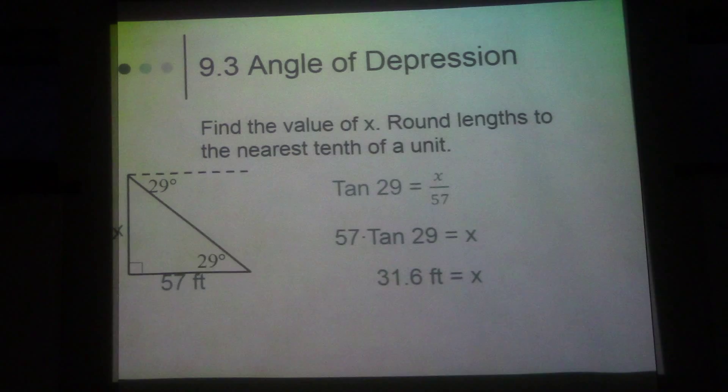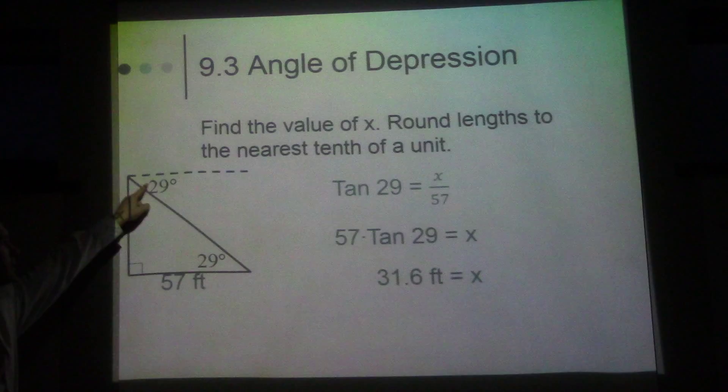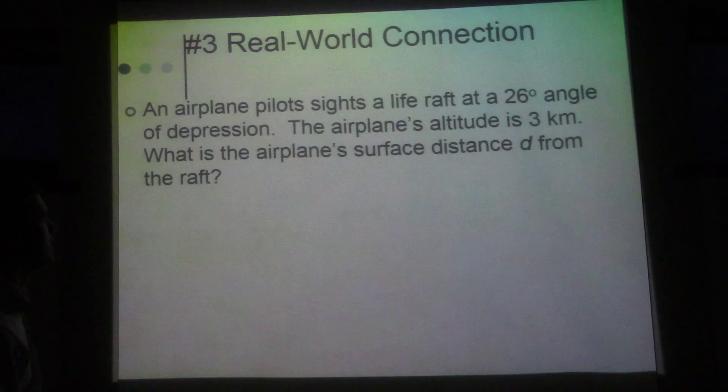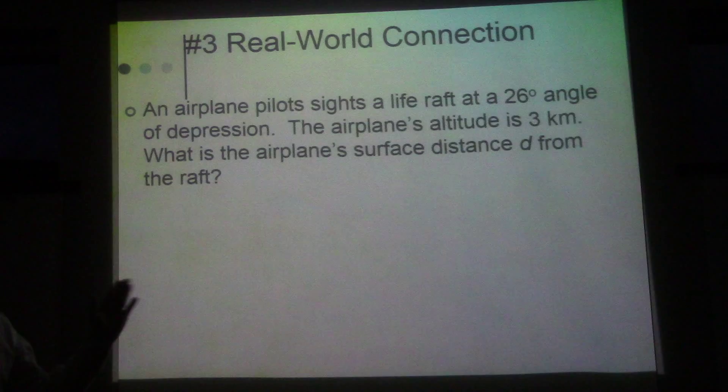Find the value of x, round the lengths to the nearest tenth. So this is just a little practice. So here's our side, we want to solve for x here. This side's 29 degrees. This line and this line are parallel. So if these two lines are parallel, what type of angle is this and this? These would be alternate interior angles. And so we know that this angle right here is 29 degrees.